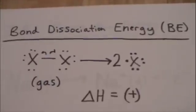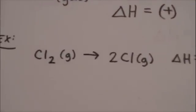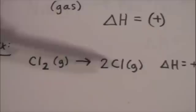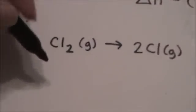And again, you're breaking the bond. So the delta H is going to be positive. An example would be taking chlorine gas and forming just Cl gas. Well, we know that would be just a Cl radical. So it would be Cl2.